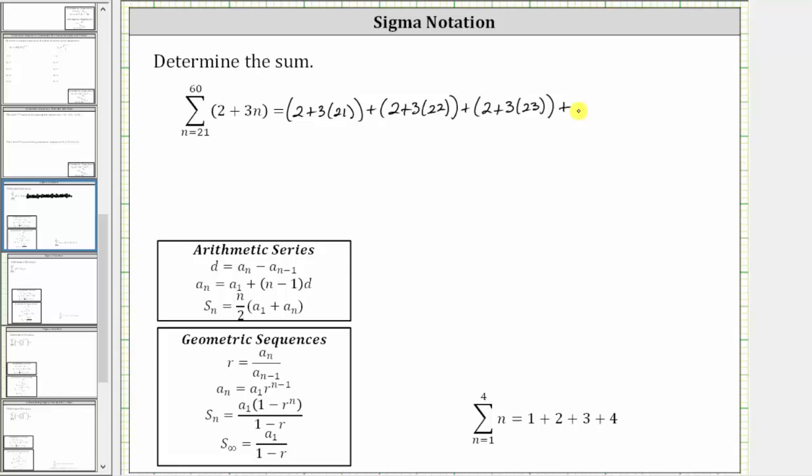Of course this continues. Let's go ahead and find the last term of the series when n is equal to 60 and therefore the last term is two plus three times 60. And now let's simplify.